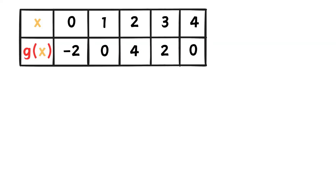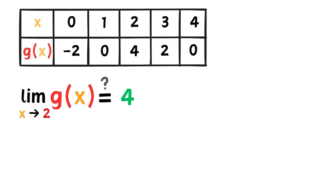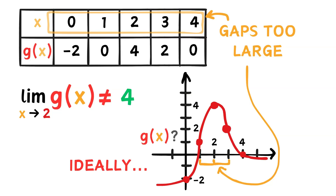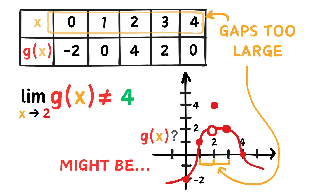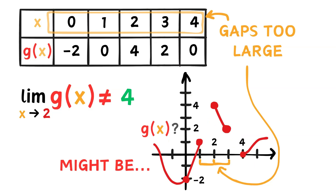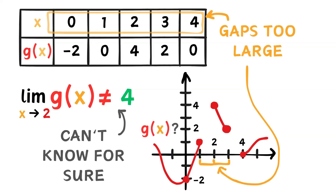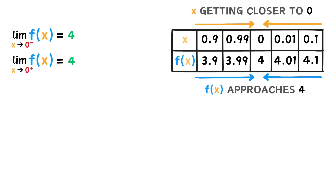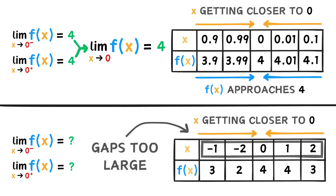Here's another table. If we were told to find the limit of g of x as x approaches 2, can we conclude that it is 4? Well, no. If we plot the points, we see that the gaps are too large. In order for the limit to be 4, we need something like this, but this graph isn't guaranteed — there might be something crazy going on in the middle. The table just doesn't have enough information. So to use a table to evaluate a limit, the x values must get closer and closer to the target value, and both limits must be the same. If the gaps are too large, there just isn't enough data to provide a reasonable conclusion.